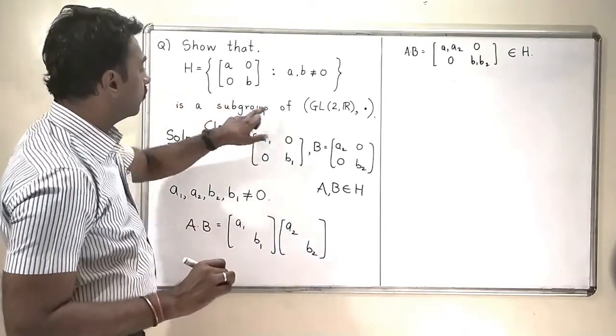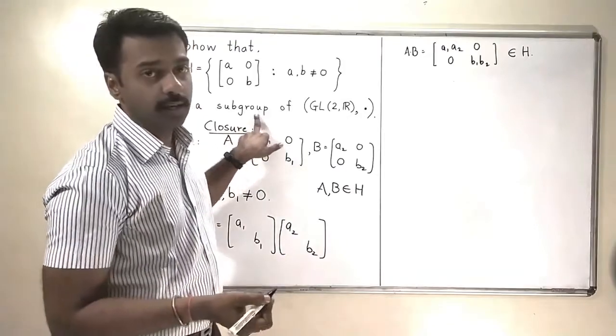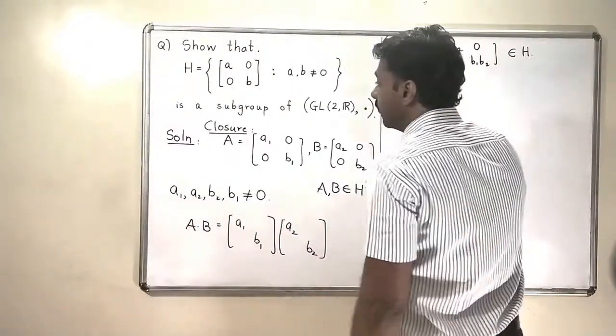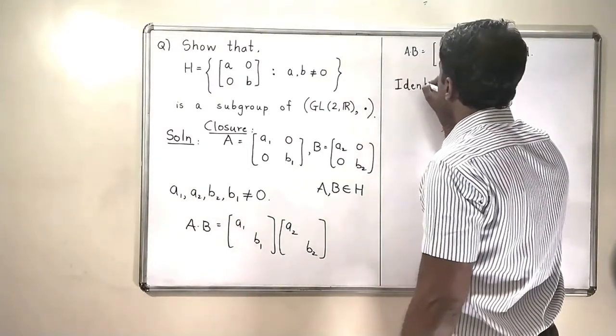Now, for showing a subgroup, we need not check the associativity because we have a theorem. So we will directly check the identity. Does the identity exist?